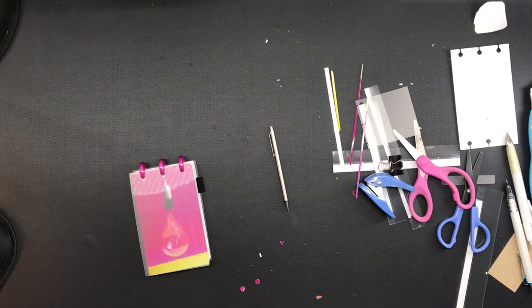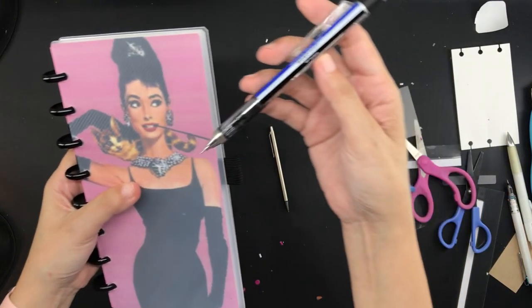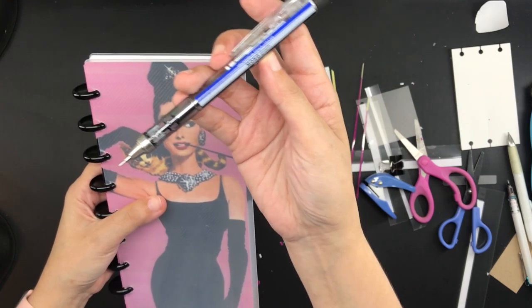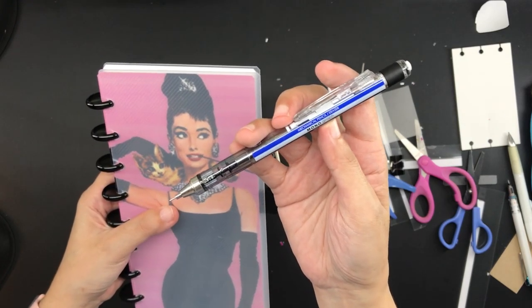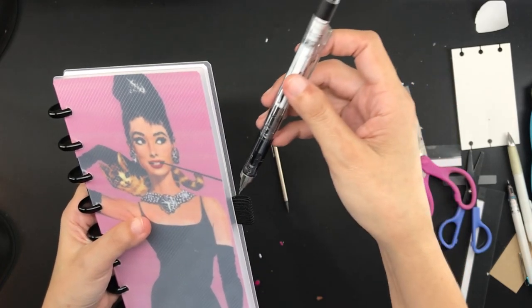When it comes to my daily planner this one right here I am using this Tombow Monograph mechanical pencil in the classic Tombow stripe color and it's on this black elastic pen loop. The pen loop here used to be white but I replaced it with a black one because it goes better with the black metal discs.